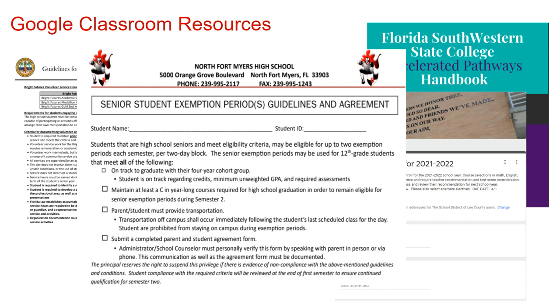Juniors, you will also find a senior exemption form for up to two off-campus periods for next school year. Please be sure to review all of the information provided and share these resources with your parents.